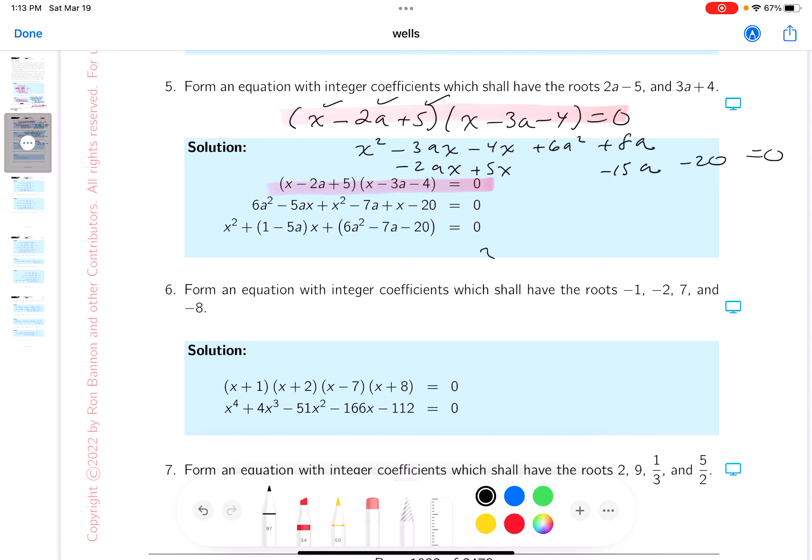Combine everything together. What do you get? x squared minus 5ax plus x. I'm going to put the, let's see what we get now.